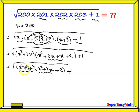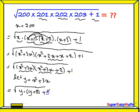Try to take y equal to x squared plus 3x. So let y. Now we will get square root of y multiplied by y plus 2 plus 1 equal to square root of y times y equal to y squared, y times 2 equal to 2y plus 1.